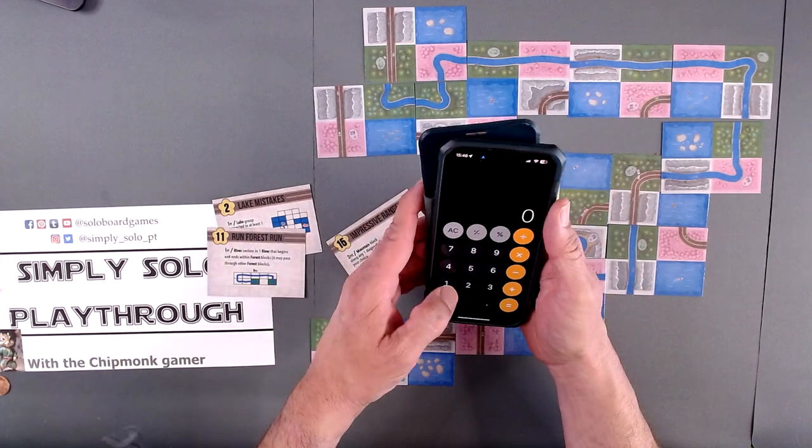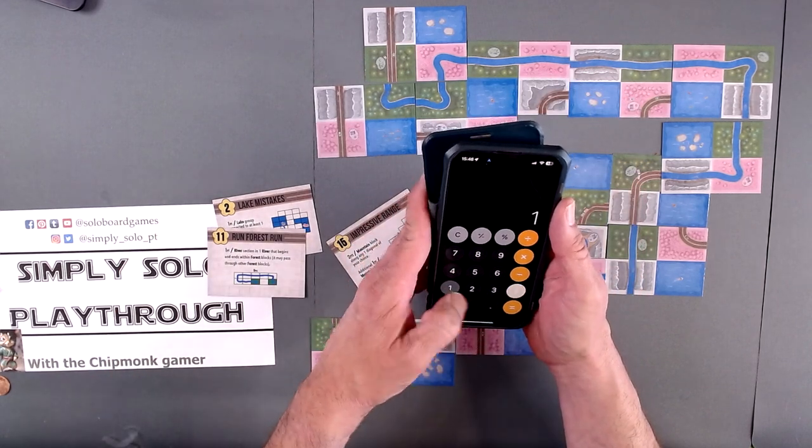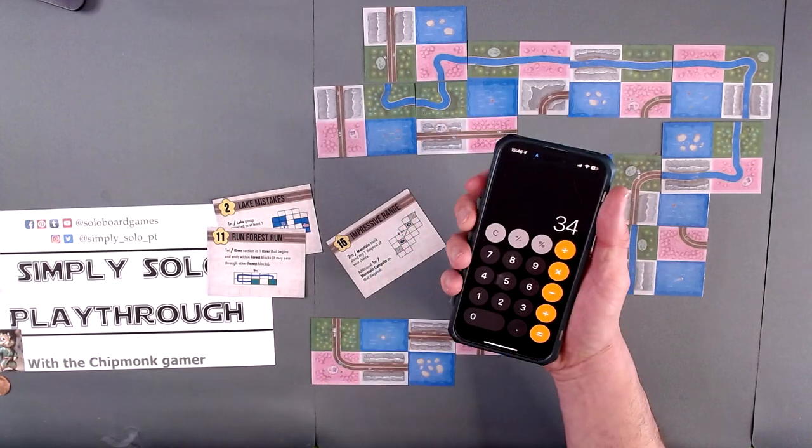Two plus eleven plus fifteen is thirty-four. Ninety-one percent.